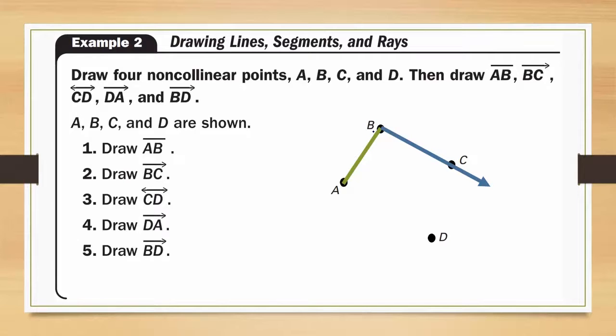Next we have to draw line CD. Here's what line CD looks like. Again, my line goes through the points C and D. Ray DA looks like this where the ray starts at D and goes all the way through A. And finally ray BD looks like this where it starts at B and goes all the way through D.